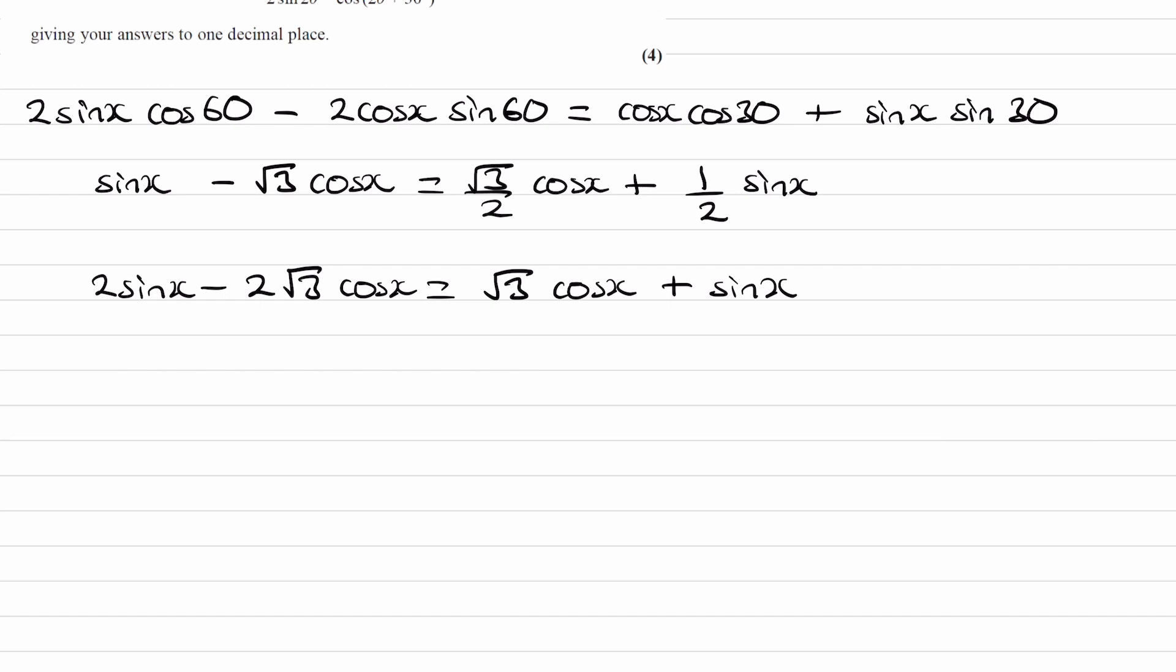And then we can rearrange. Take away sin x from both sides. This goes away. This turns into sin x if we take away sin x. And then add this to both sides. Add 2√3 cos x to both sides. We end up with 3√3 cos x.